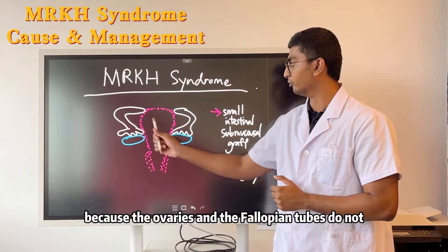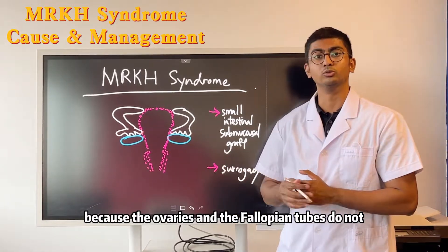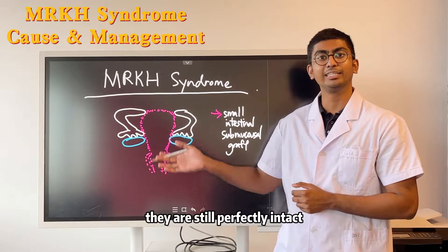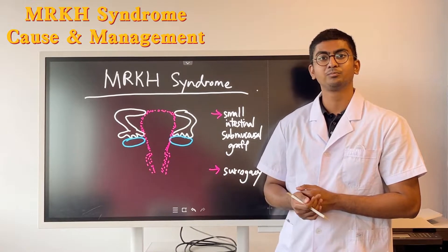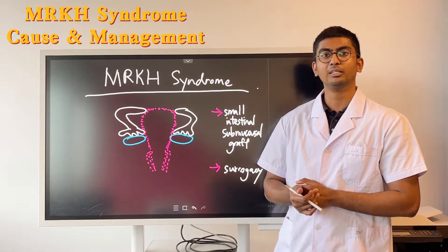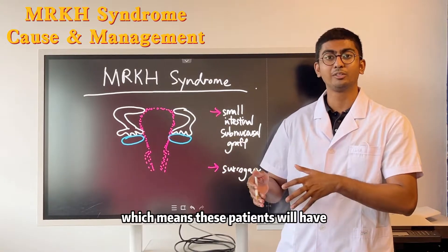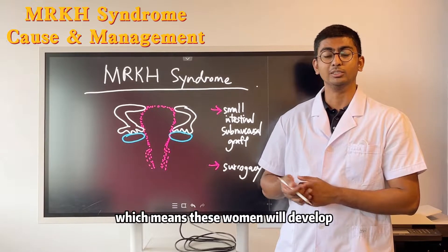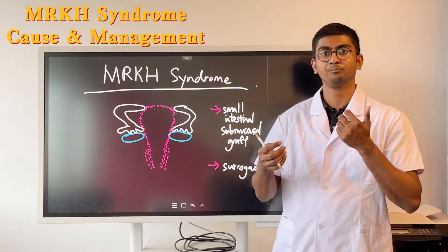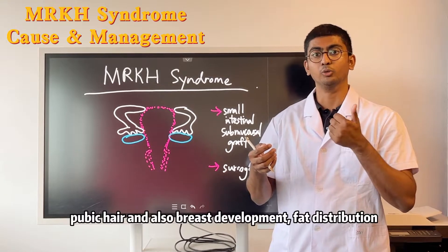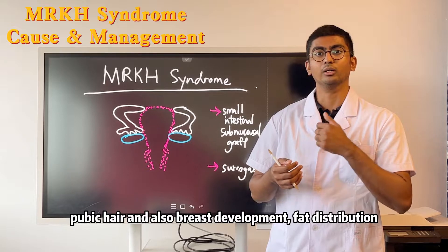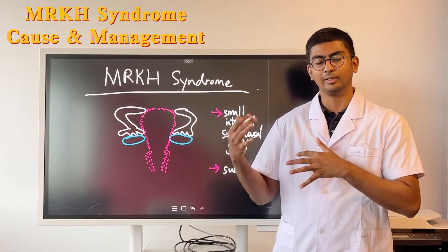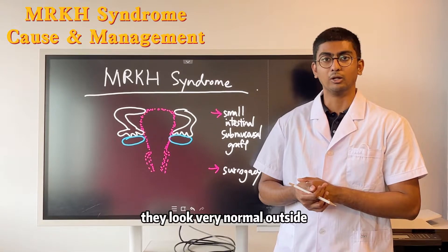Because the ovaries and the fallopian tubes do not originate from the Müllerian ducts, they are still perfectly intact and fully functional. This means these patients will have secondary sexual characteristics — these women will develop pubic hair, breast development, and normal fat distribution, so they look very normal externally.